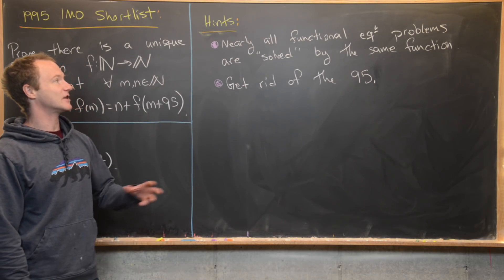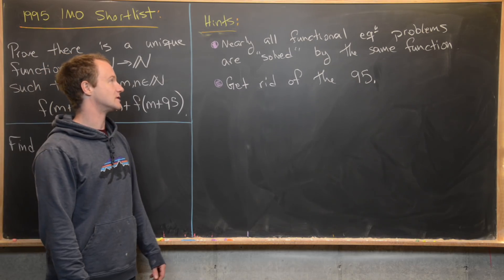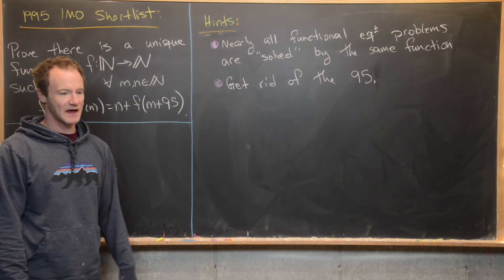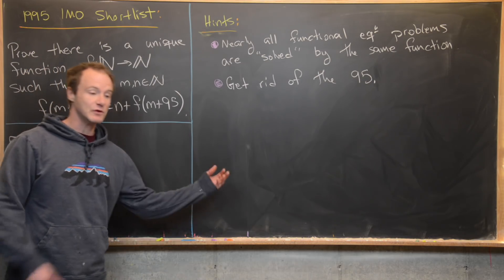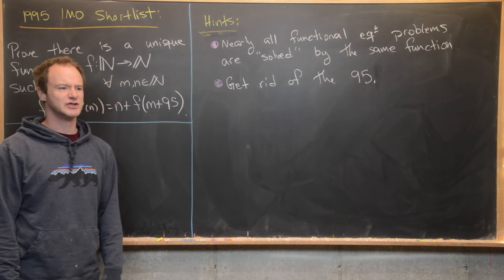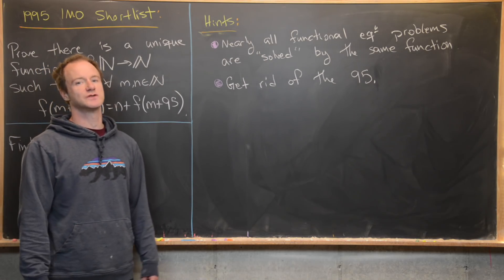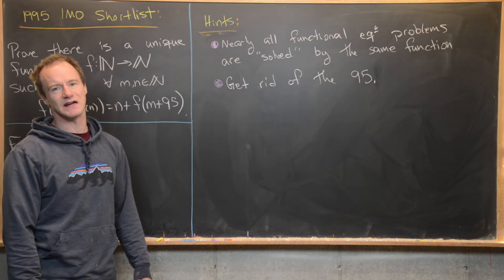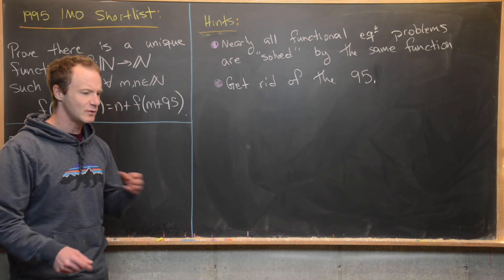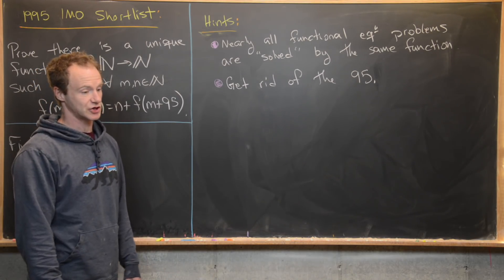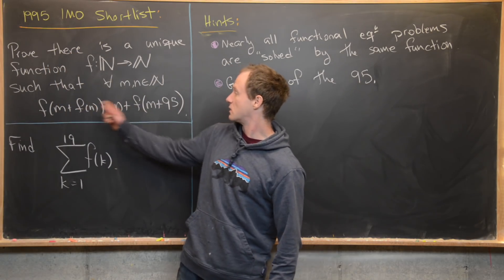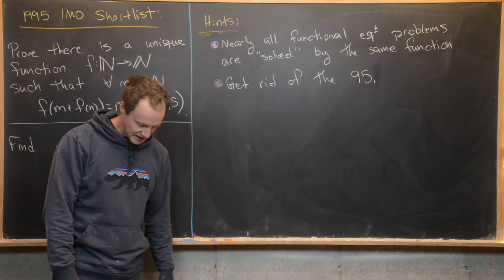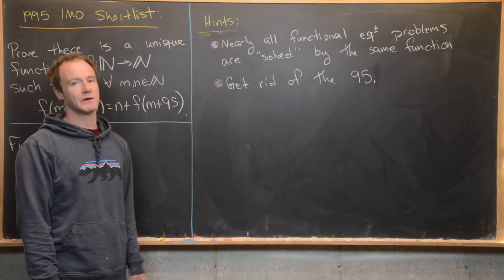My first hint is that nearly all functional equation problems are solved by the same function. If you look back at some videos on functional equations, you'll notice the same function shows up again and again. My second hint is to get rid of this 95 — maybe redefine another function so that we have a functional equation without the 95. Give this problem a go with those hints.